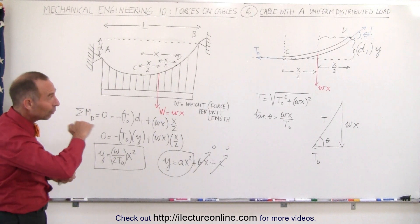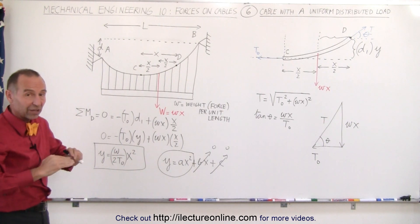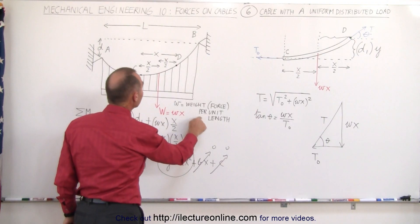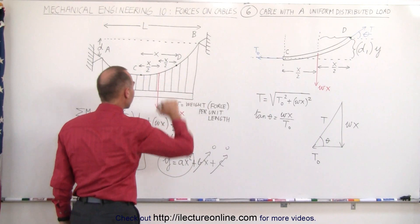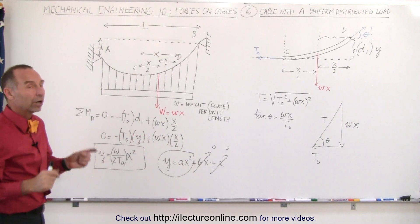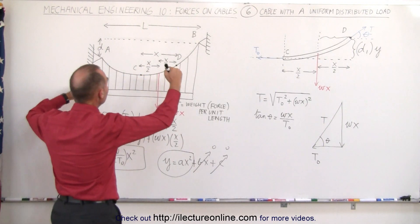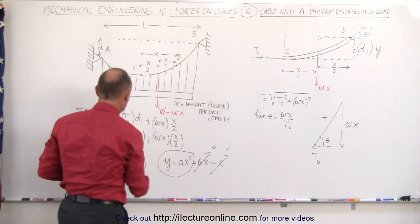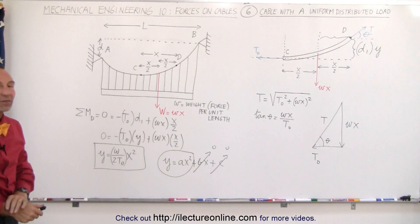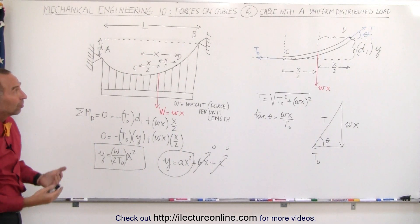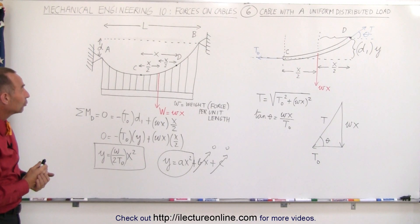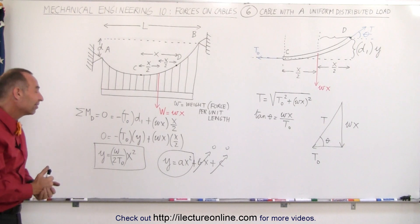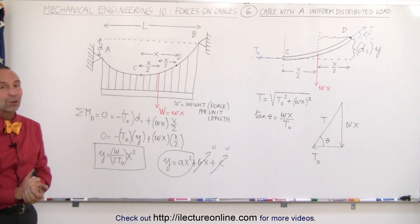Notice this is a quadratic equation in the form y = ax² (without bx or c terms) because we chose our origin at point C. The coefficient in front of x² is omega divided by 2T0, where T0 is the constant horizontal tension component throughout the cable and omega is the weight per unit length of the load. Therefore, regardless of where A and B are placed, a uniform distributed load will produce a cable in a parabolic shape, confirming that this indeed has a parabolic equation.